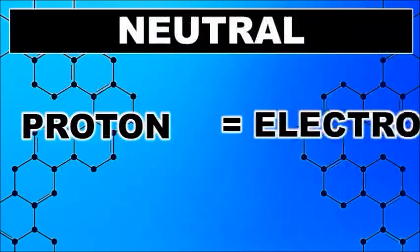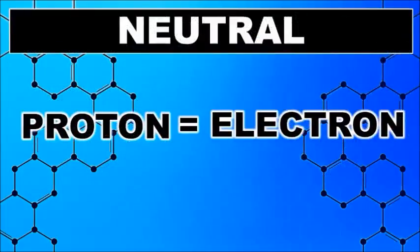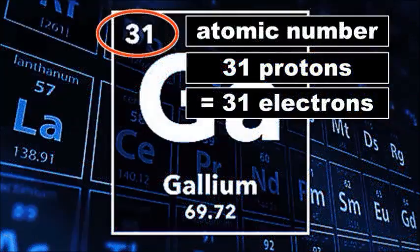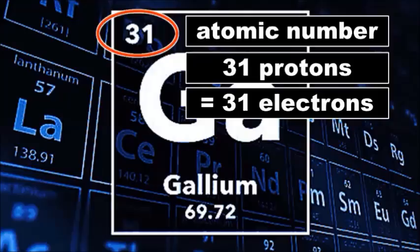And for neutral atoms, the number of protons is equal to the number of electrons. Gallium is neutral, and so if there are 31 protons, there are also 31 electrons.